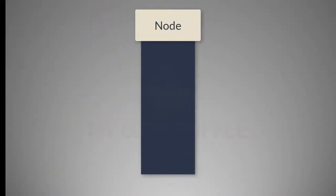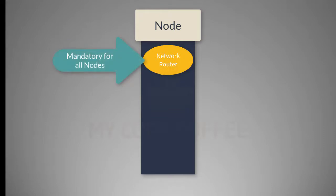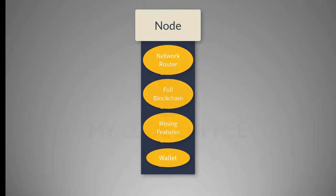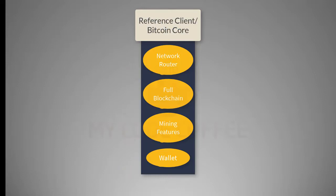Let's think about a node in a blockchain network and what it can do. Number one, it should have a network router — this is a must-have feature, otherwise how will you connect with the Bitcoin network. Number two, it can have a full blockchain. Number three, it can have mining features, which means it can be a mining node. And number four, it can have a wallet to store a private key. If a node has all these features — network routing, full blockchain, mining functions, and a wallet — then this type of node is called a reference client, or Bitcoin Core.